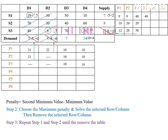Next, find penalty 4. For S1 row, penalty is 50 minus 10, that is 40. For S2 row, it is 60 minus 40, that is 20. For D3 column, penalty is 50 minus 40, that is 10. For D4 column, penalty is 60 minus 10, that is 50. Among these penalties, 50 is the maximum value for D4 column. In D4 column, minimum value is 10. Supply is 2 and demand is 4; supply 2 is the minimum. Allocate 2, then 2 minus 2 equals 0 and 4 minus 2 equals 2. Remove S1 row.